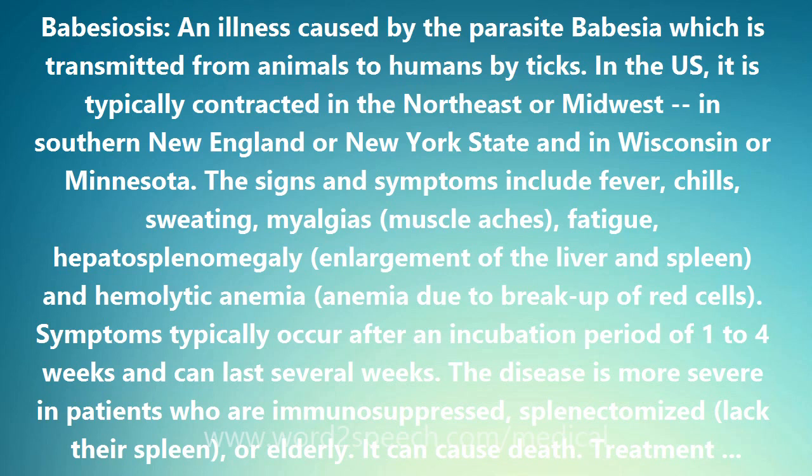The definitive host is a tick, in this case the deer tick. Once ingested by an appropriate tick, gametes unite and undergo a sporogonic cycle resulting in sporozoites. Transovarial transmission, also known as vertical or hereditary transmission, has been documented for large Babesia species but not for the small Babesia such as B. microti.